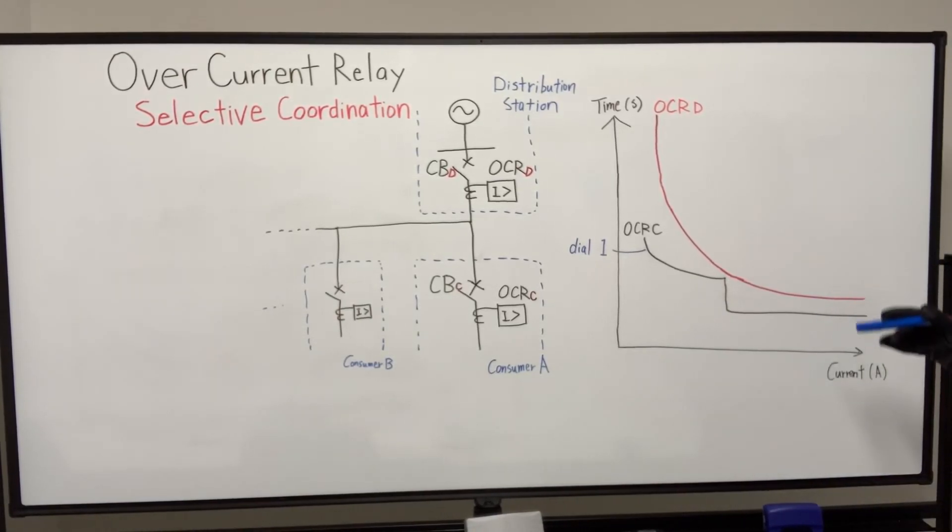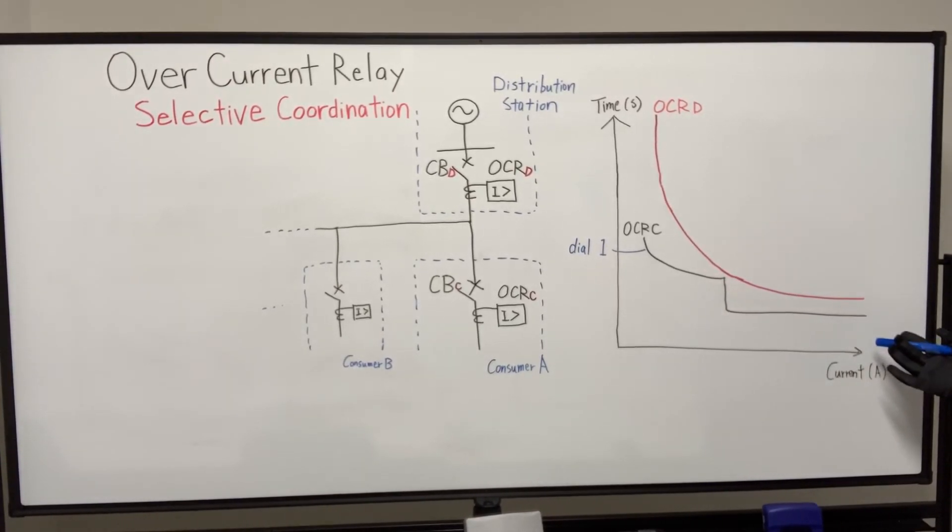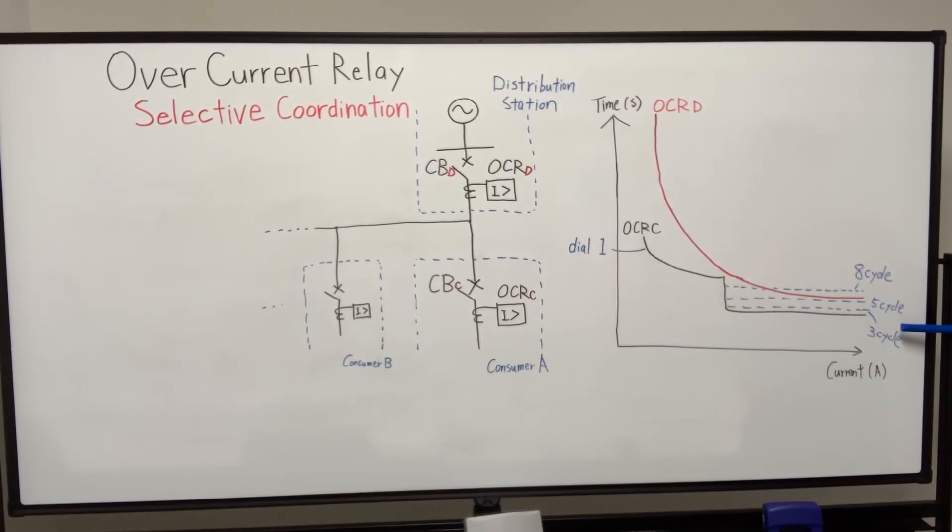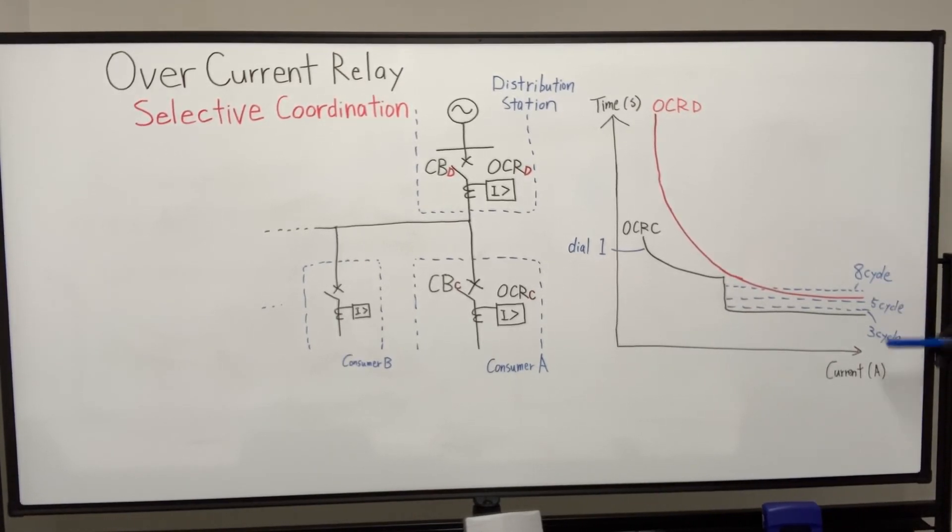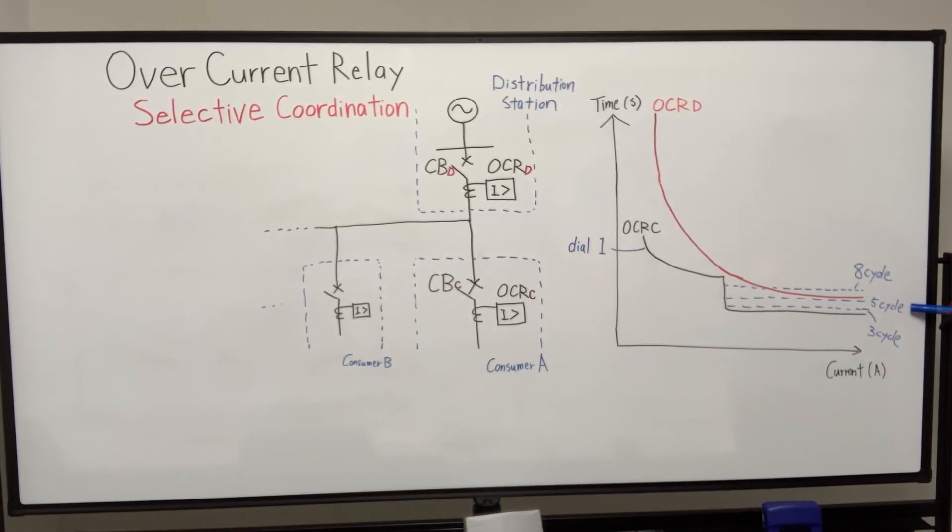But it's still not enough, because we didn't consider the circuit breaker's interrupting time. So here there are some interrupting times of circuit breaker C: three cycle, five cycle, and eight cycle as an example. And if this circuit breaker C has the eight cycle interrupting time rating, the coordination is not achieved. So we needed to replace the circuit breaker which has shorter interrupting time, like five cycle or three cycle.